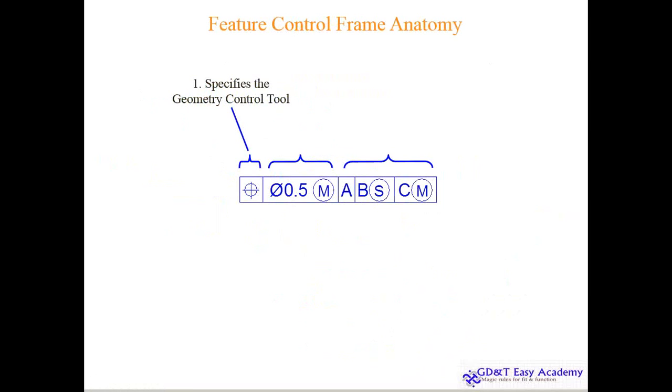The feature control frame is something like this. The first one specifically gives you the geometry control tool like positioning, flatness, straightness, etc. And the second control gives you the tolerance zone. So this is the tolerance.